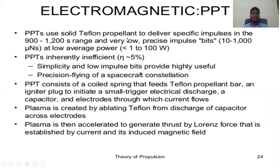Electromagnetic PPT (Pulsed Plasma Thruster): uses solid Teflon propellant to deliver specific impulse in the 900–1200s range with very low, precise impulse bits of 10–1000 μN·s (10⁻⁶ Newton-seconds) at low average power of 1 to less than 100 watts. PPT efficiency is approximately 5%. PPT consists of a coiled spring that feeds a Teflon propellant bar, an igniter to initiate a small trigger electrical discharge, a capacitor, and electrodes through which current flows. Plasma is created by ablating Teflon on recharging of the capacitor across the electrodes, and is then accelerated to generate thrust by Lorentz force established by current and its induced magnetic field.